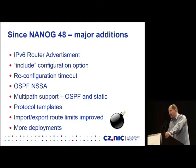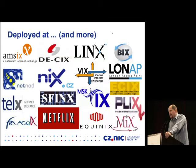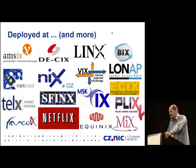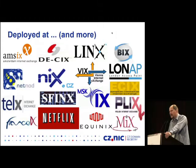Most importantly, Bird has been deployed on many new exchange points. Here is a list of exchange points running Bird as a route server. Not just exchange points — Netflix is running Bird in their Open Connect appliances. Bird runs on all the major exchange points in the world, especially the biggest ones like AMS-IX, DE-CIX, and others based in Europe. This is not a complete list — there are many more companies running Bird — but I chose logos you might recognize. A lot of local ISPs are using it in their software-based routers, and my company uses Bird for DNS Anycast nodes.